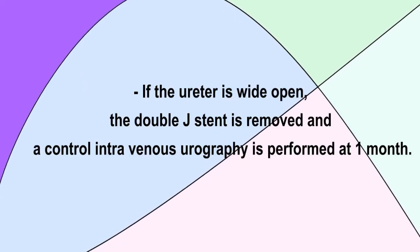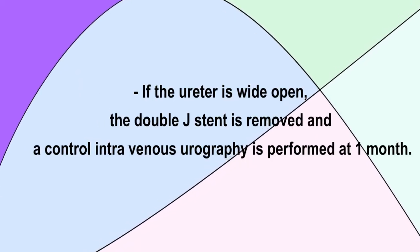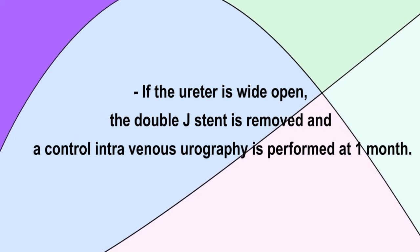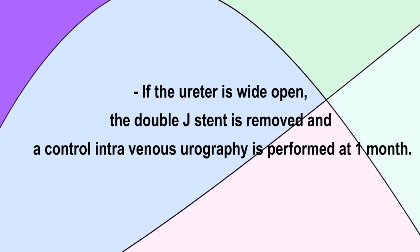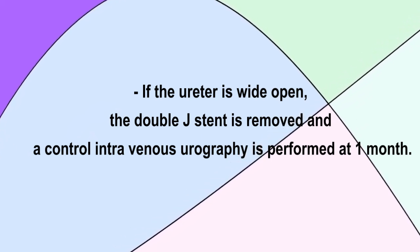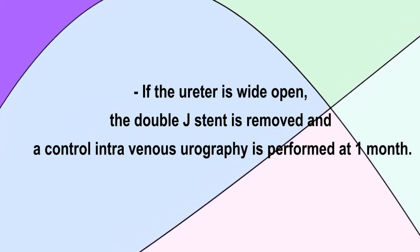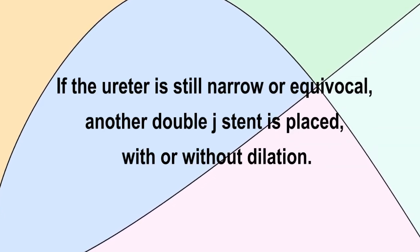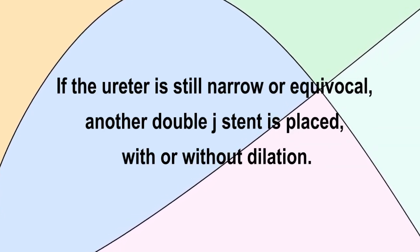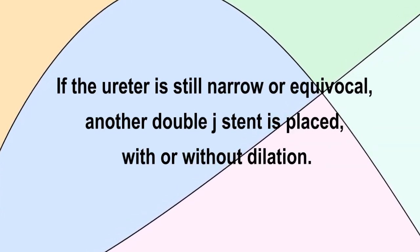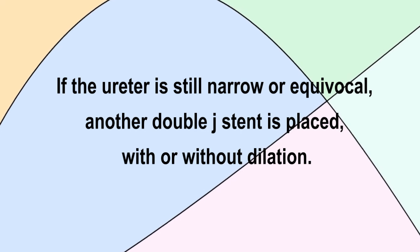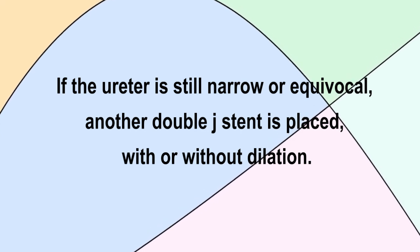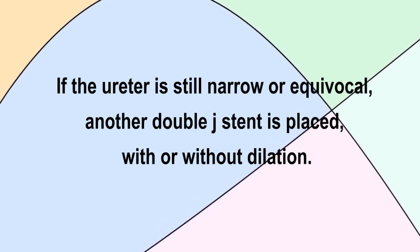If the ureter is wide open, the JJ stent can be removed and control urography can be performed at one month. If the ureter is still narrow or equivocal, another JJ stent is placed with or without dilation.